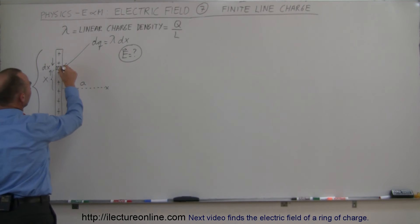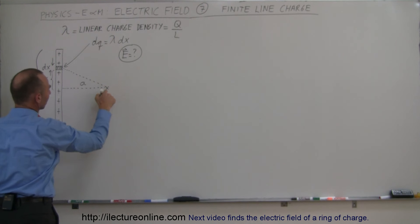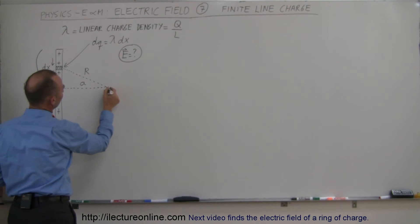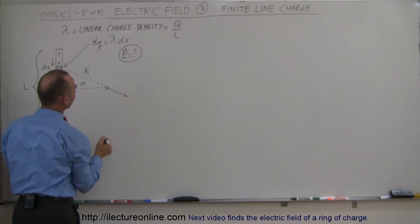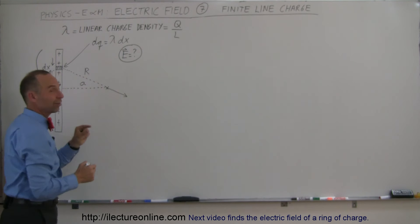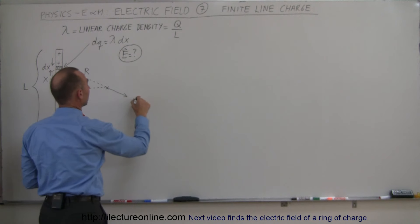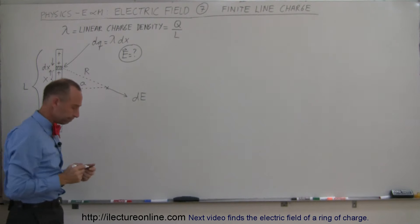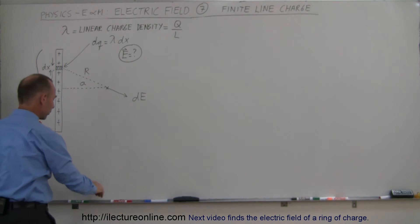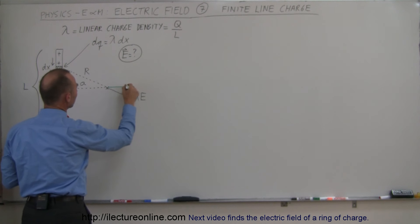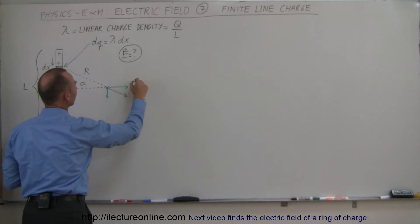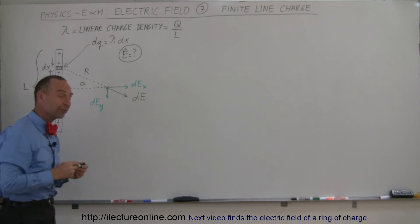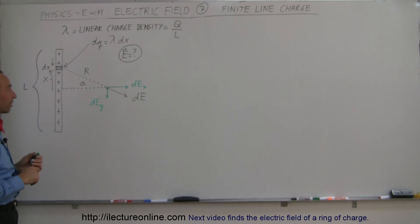If we draw a line from that segment to the point of interest where we want to know the electric field, that distance is equal to r. Since this is positive charge, there will be a small amount of electric field dE at this location due to the charge in that small segment. That dE has a horizontal component dEx and a vertical component dEy.